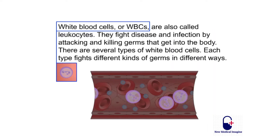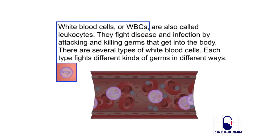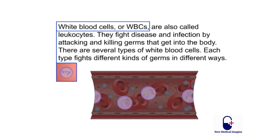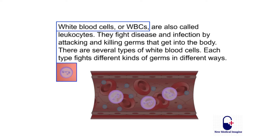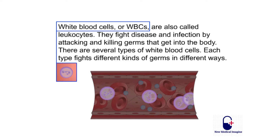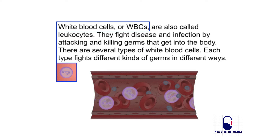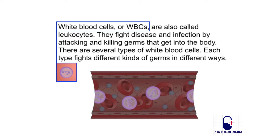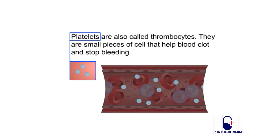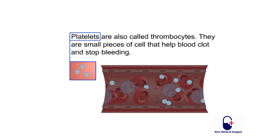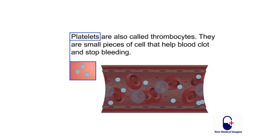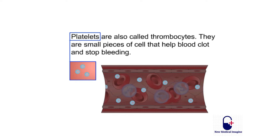White blood cells, or WBCs, are also called leukocytes. They fight disease and infection by attacking and killing germs that get into the body. There are several types of white blood cells; each type fights different kinds of germs in different ways. Platelets, also called thrombocytes, are small pieces of cell that help blood clot and stop bleeding.